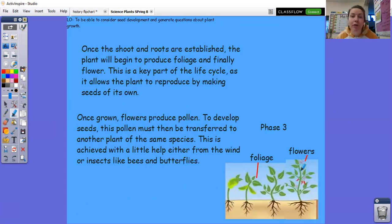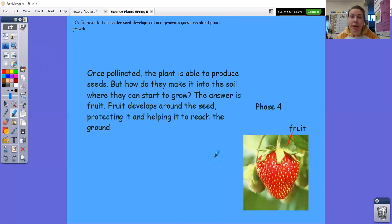Then phase three is when the foliage and flowering happens. Now this is the key part of the life cycle because it allows the plant to reproduce by making seeds for its own. So once grown, flowers then produce pollen. To develop the seeds, pollen then must be transferred to another plant of the same species. And this is normally achieved from windy conditions or insects like bees and butterflies. And we often notice that in the summer when we see these heavy bumblebees covered with pollen and they're flying from flower to flower. And then once the plant has been pollinated, the plant is able to produce the seeds themselves. But how do they make back into the soil once the seed has been produced? Because we see that the plants grow all the time. The answer is fruit. The fruit develops around the seed and it protects it and helps it later on to reach to the ground. And we're going to be learning more about it as the weeks go on.